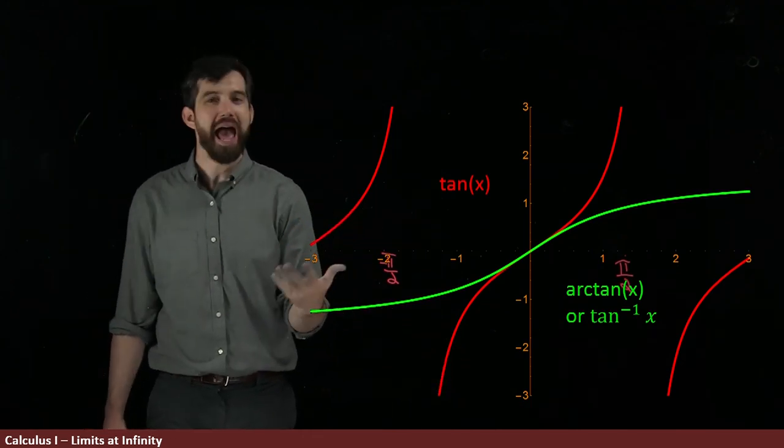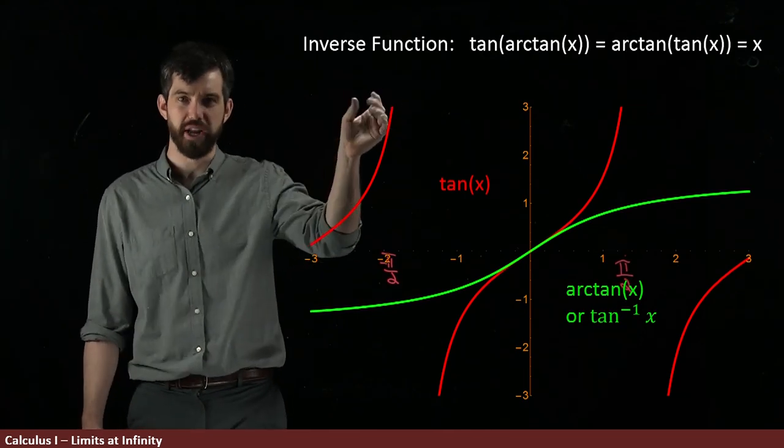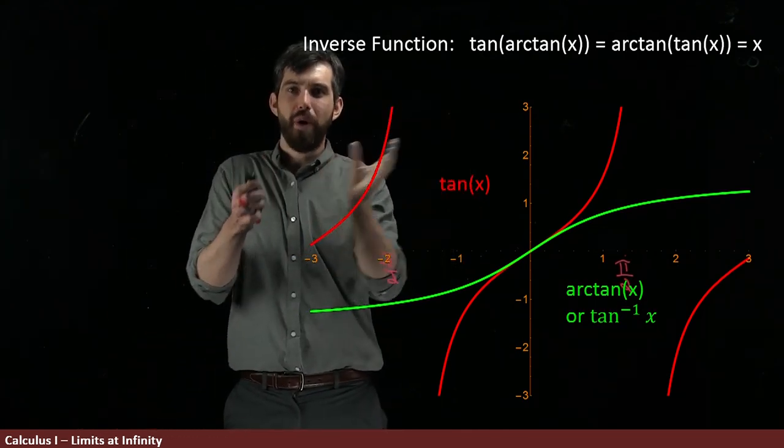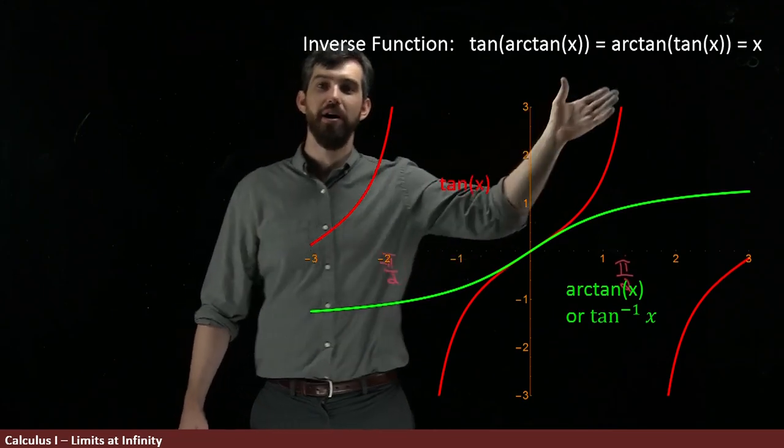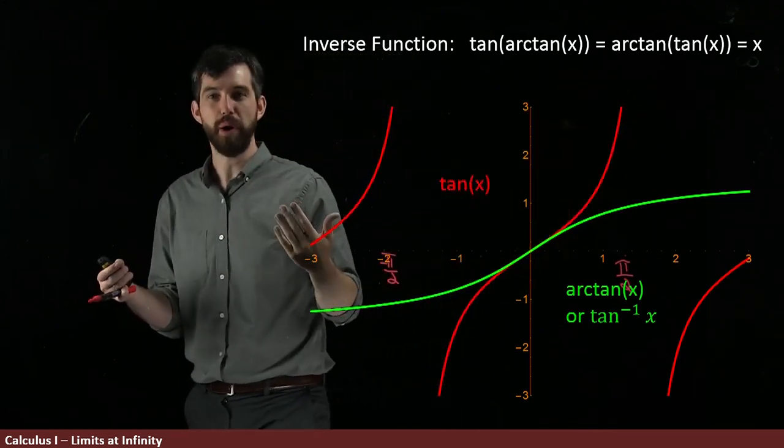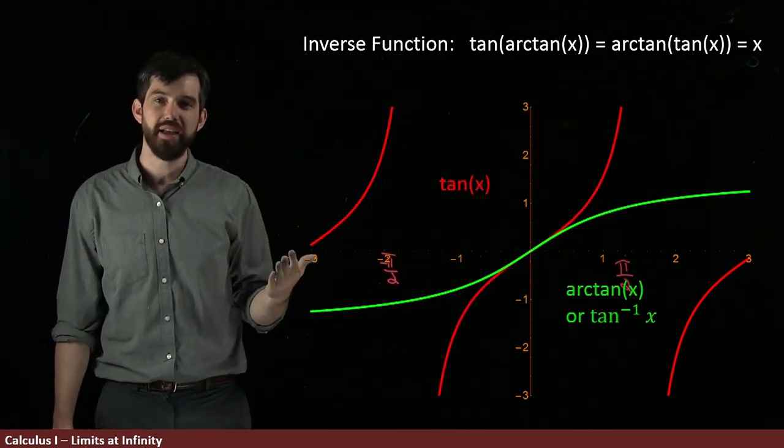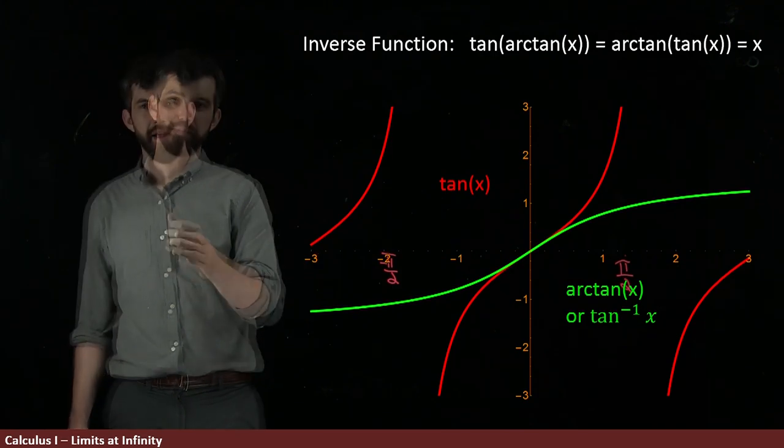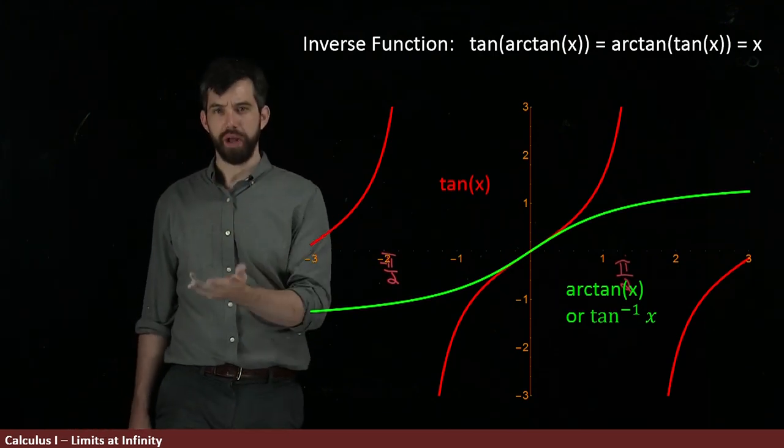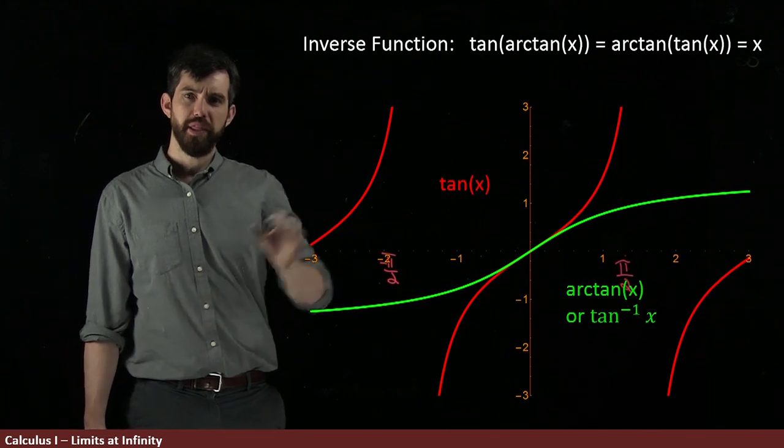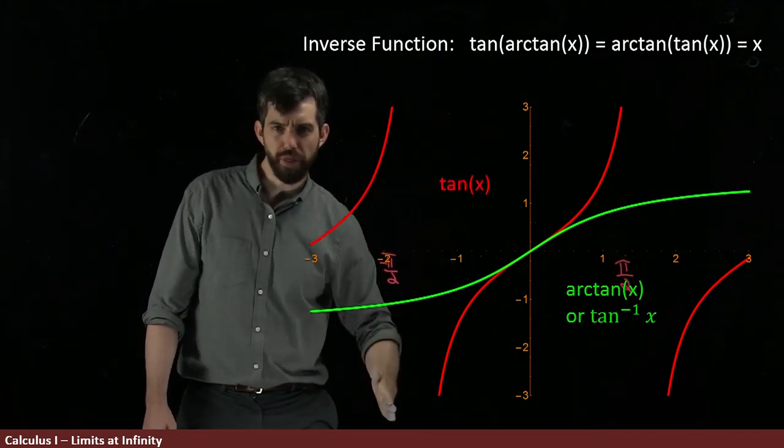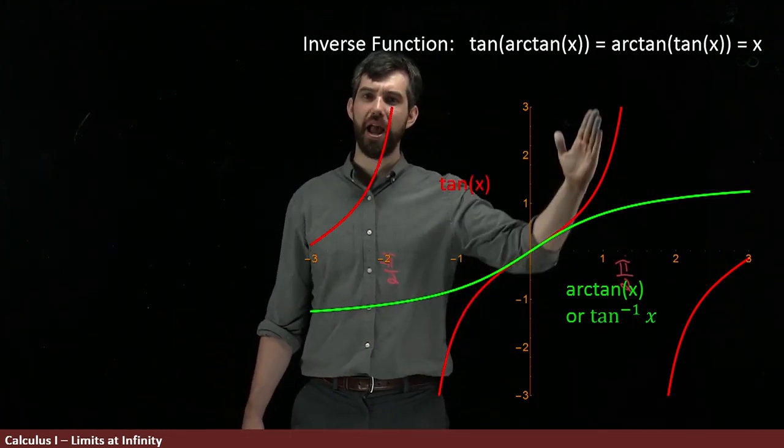The other defining property that we have here is that for an inverse function, if you compose them in either way, so tan of arctan or arctan of tan, either way you compose them, what you get out of it is just the identity function. Now, I should say one quick caveat.